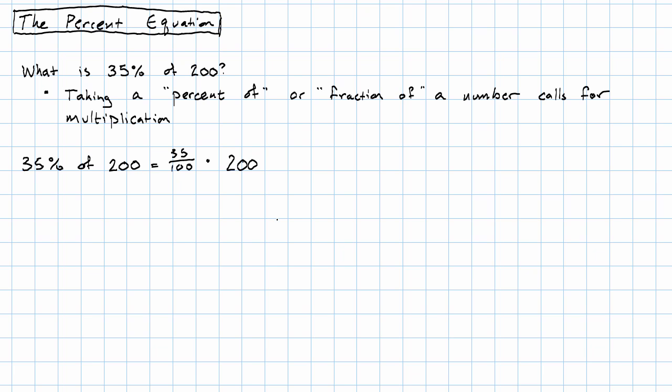35% of 200 is 35 hundredths times 200, which is 70. And those are the only kinds of problems involving percents that we've seen. Because answering any other kind of question about percents involves algebra, whether you notice it or not.